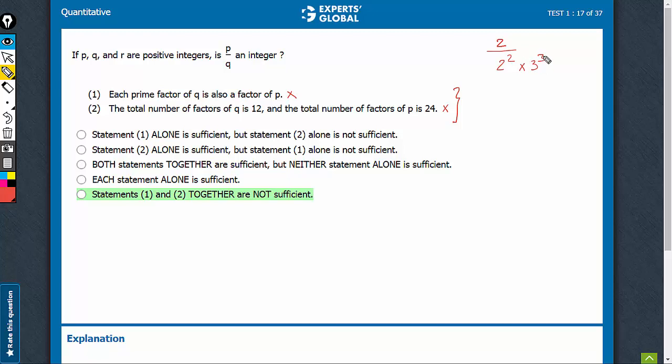So now, number of factors would be 2 plus 1 into 3 plus 1, 3 into 4, 12, and here, this is 1 into 3 raised to power, this has 24 factors. So let us say this is 11. So number of factors here would be 2 into 12, 24, but see, this is not an integer because you would still have a 2 in the denominator.